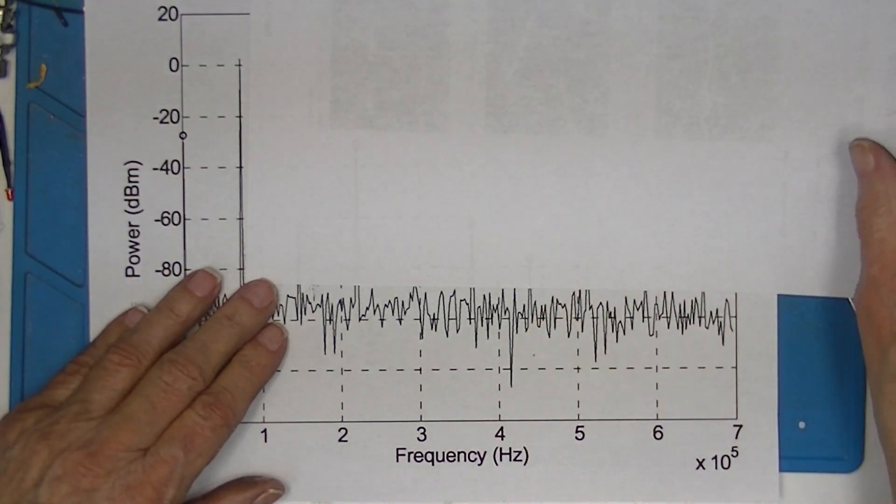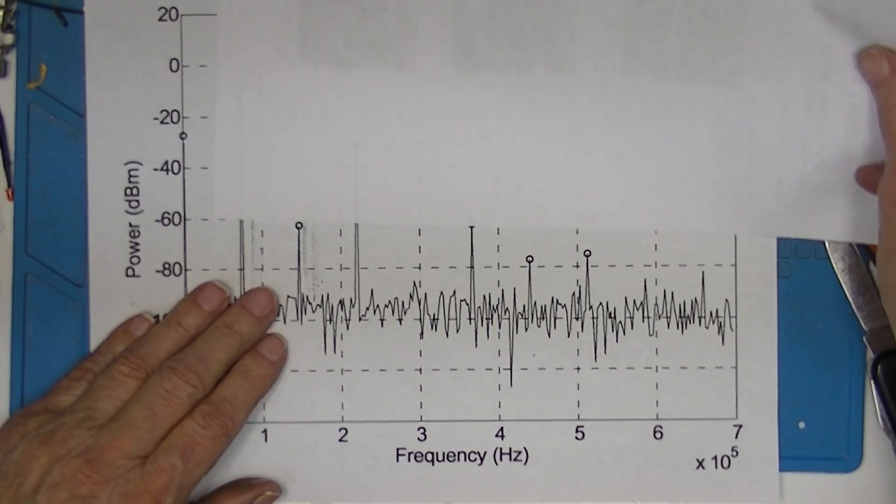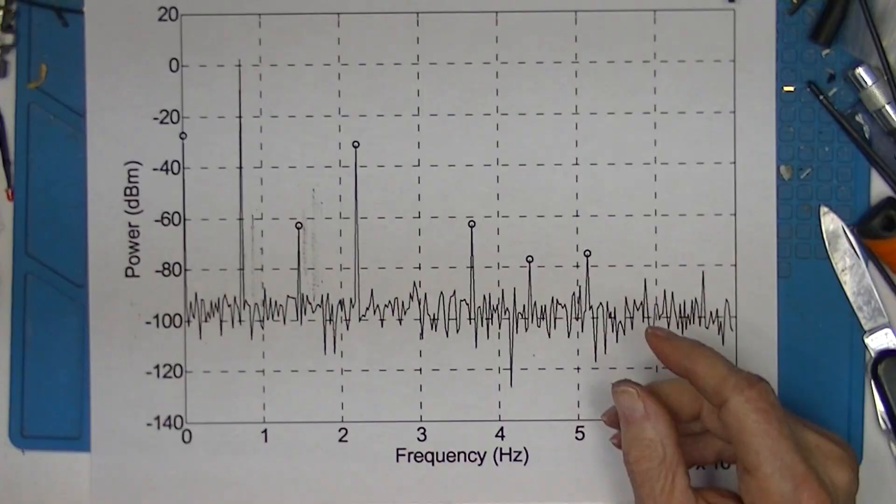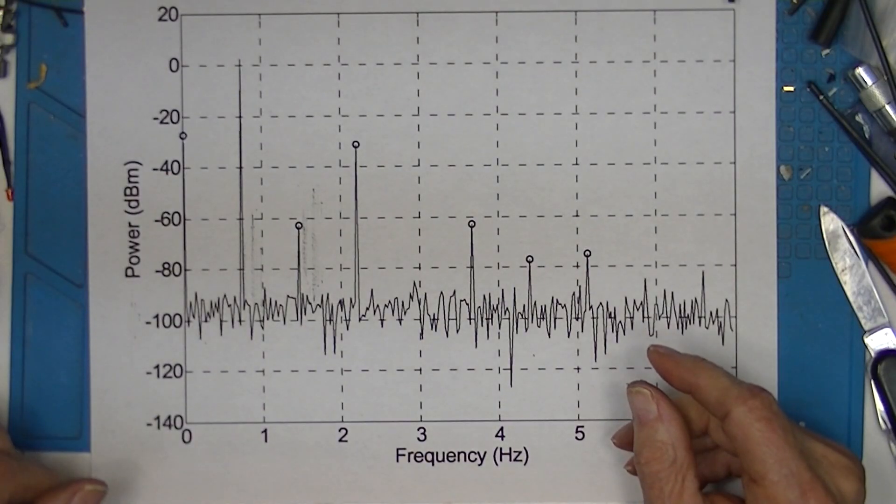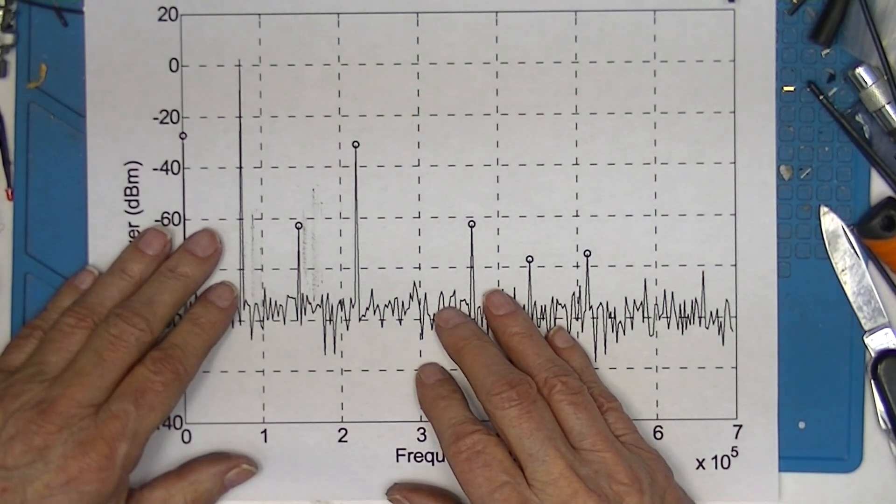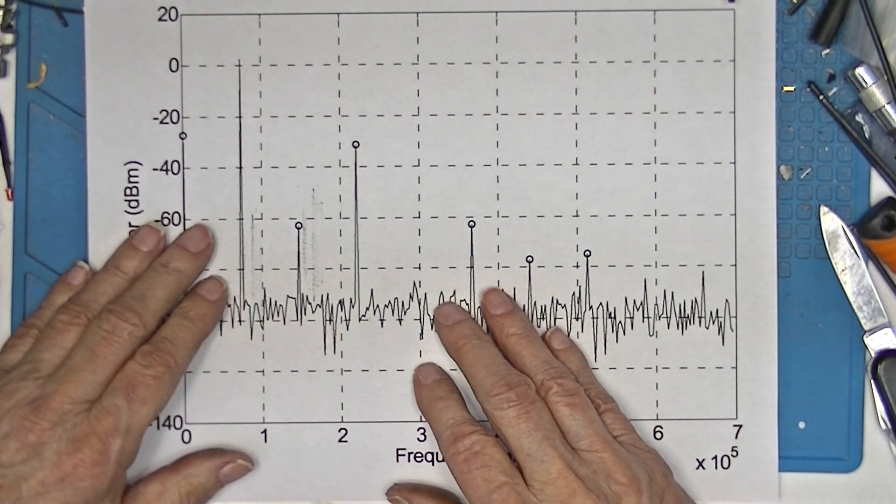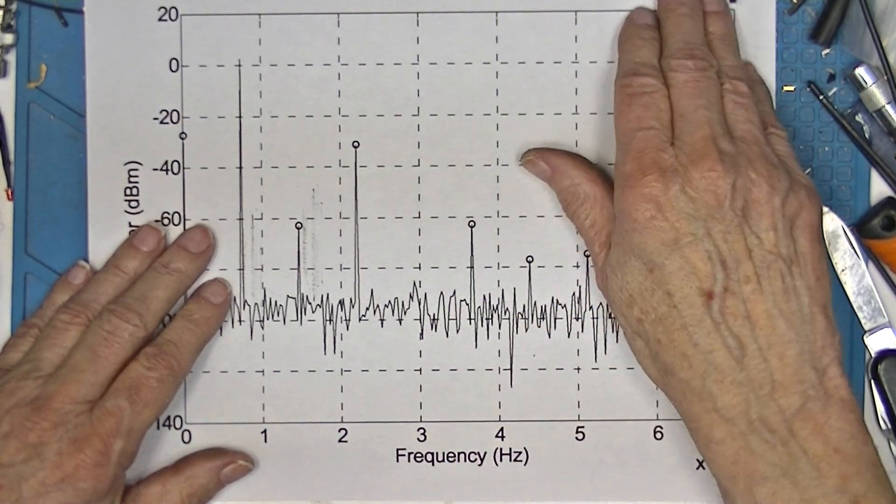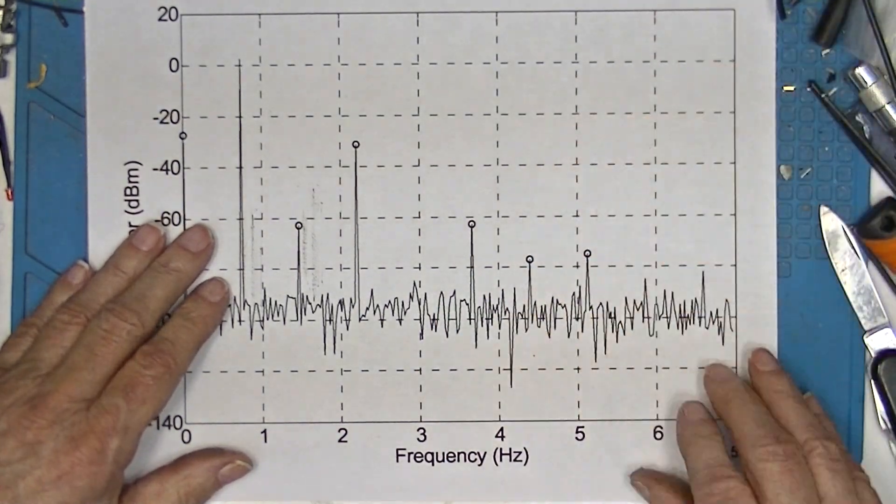With increasing distortion comes increasing energy in the harmonics. In John Lindsey Hood's day he would have measured distortion with a filter-type distortion analyzer, and a filter-type distortion analyzer works like this.